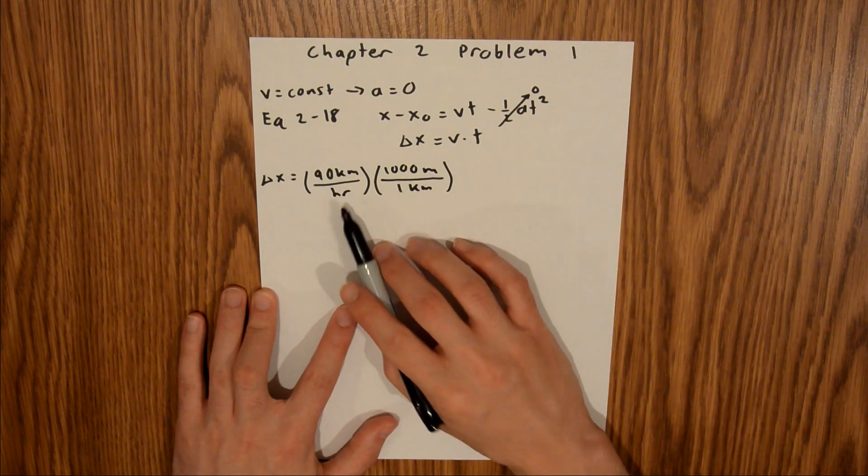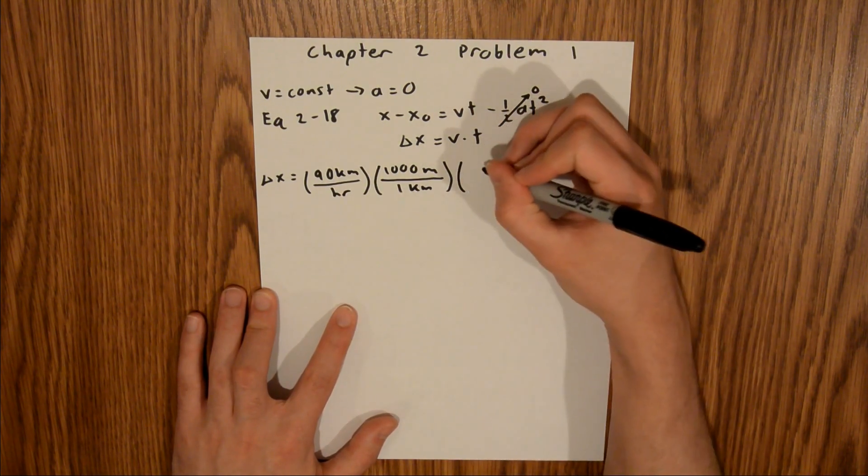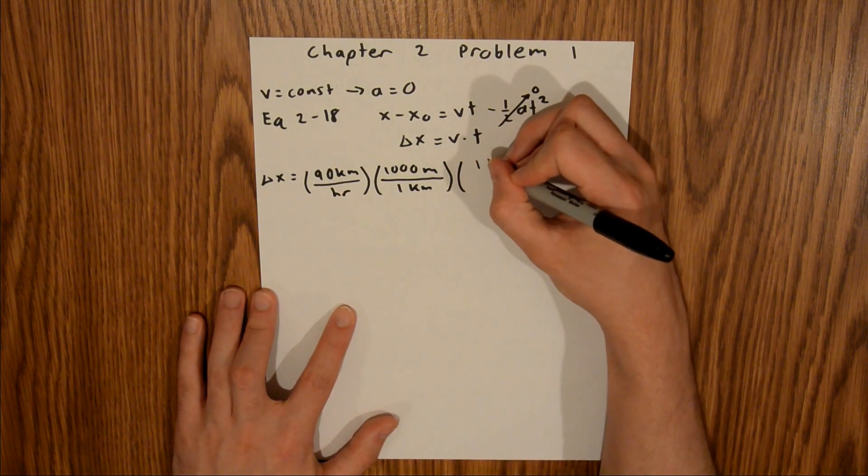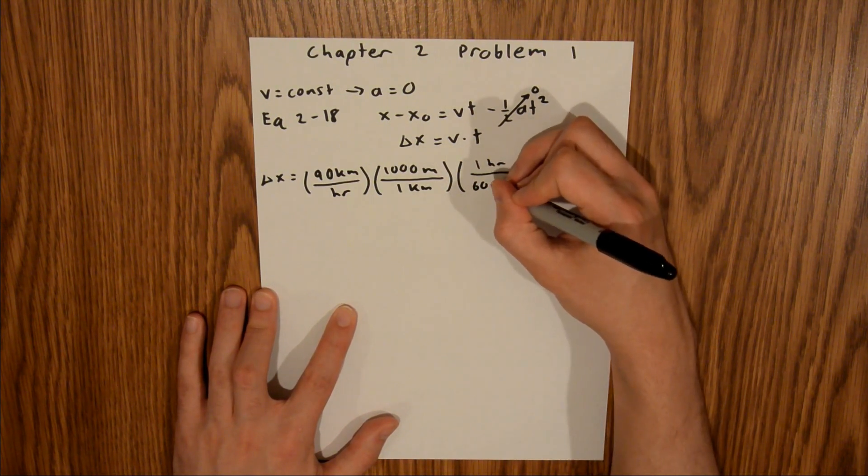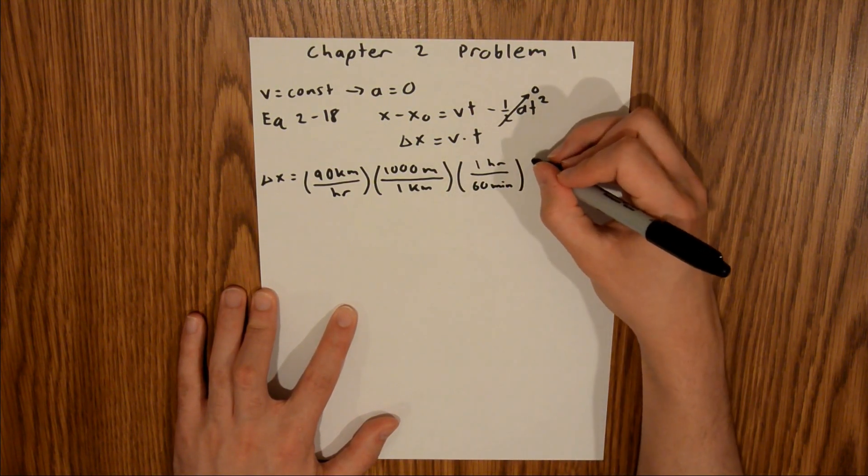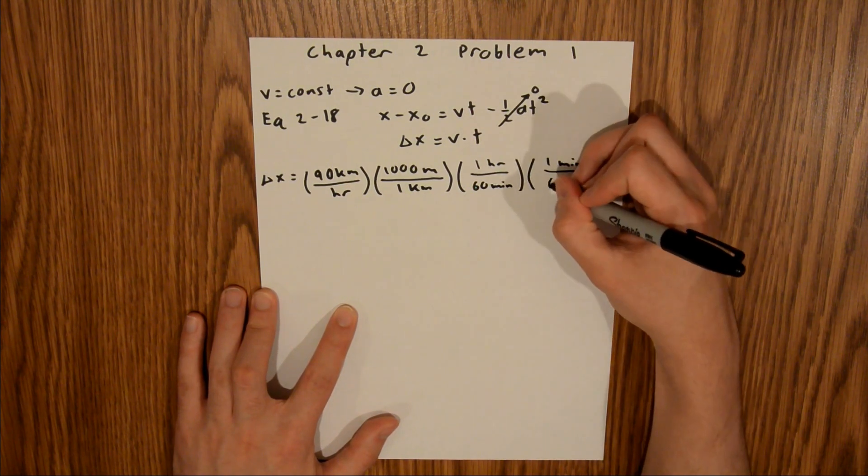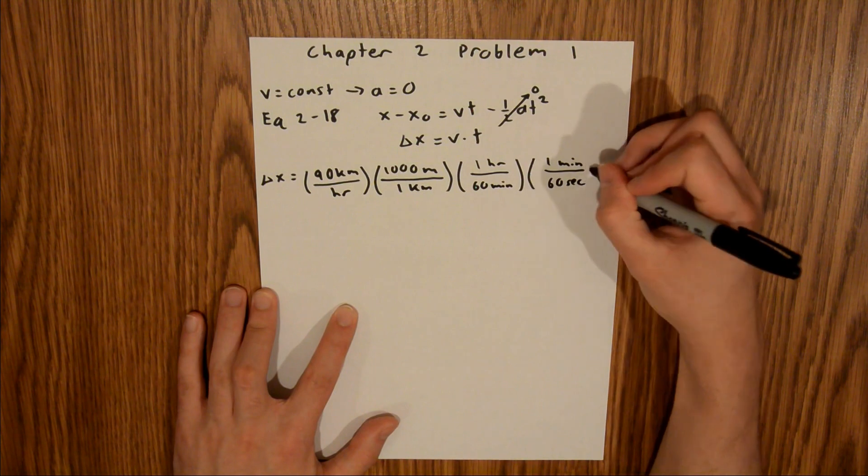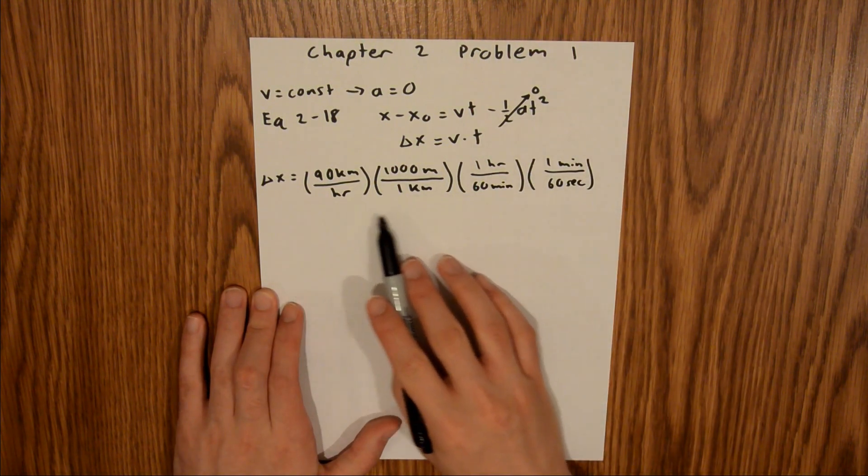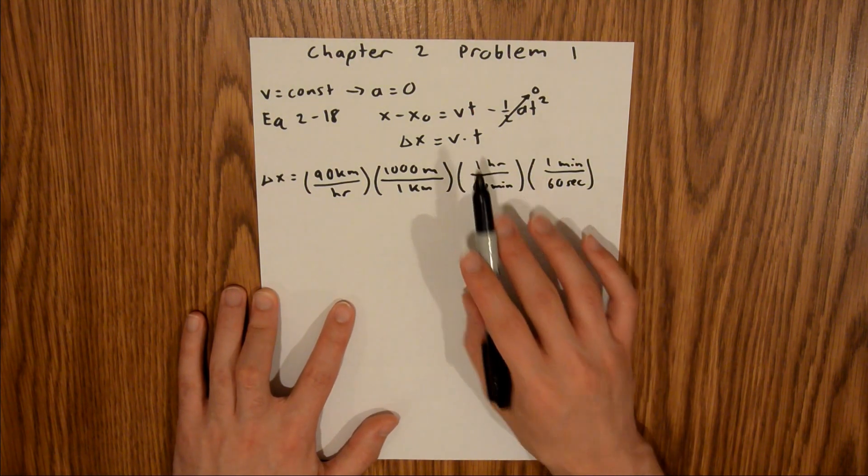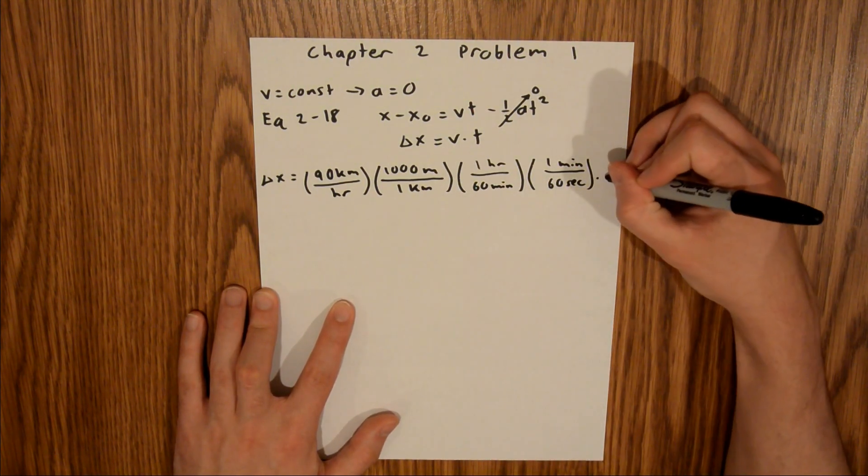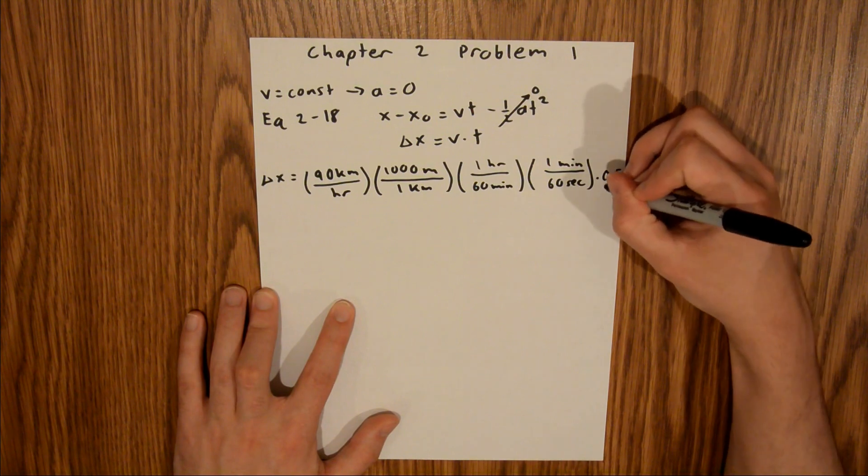And then we need to convert hour into seconds. And then that will give us 1 hour is equivalent to 60 minutes. And then 1 minute is 60 seconds. So that entire term is our velocity in terms of meters per second. And now we have to multiply by the time, which we are told is 0.5 seconds.